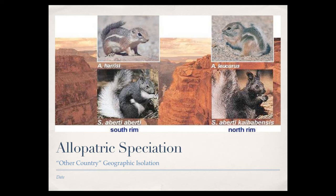Allopatric speciation — known as 'other country' speciation — is a situation in which two species form because they have become geographically isolated from one another. The Grand Canyon is a classic example: two different species of squirrels exist, one on the south rim and one on the north rim. Over time those squirrels became geographically isolated as the Grand Canyon became too deep for them to cross, and as they were isolated they became genetically different from one another, resulting in two separate species.